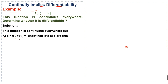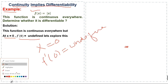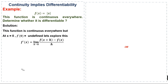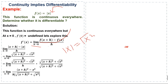We prove that at x = 0 the derivative of f(x) = |x| does not exist. Using the definition of the derivative: f'(x) = limit as h approaches 0 of [f(x + h) − f(x)] / h, we apply this definition to the given function and simplify, noting that |x| = √(x²).